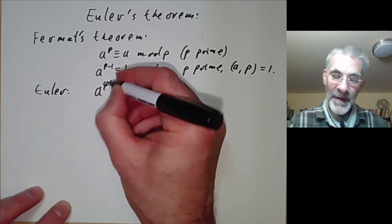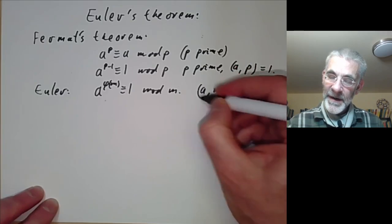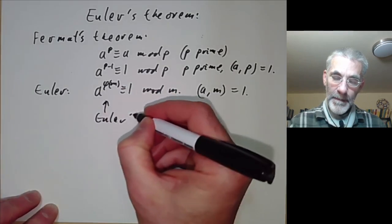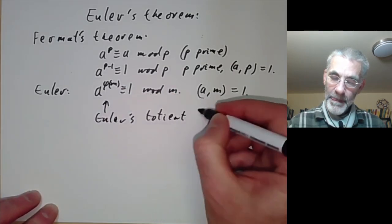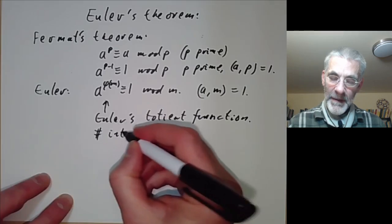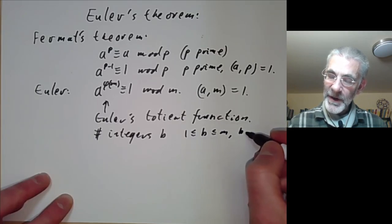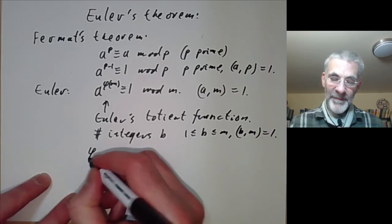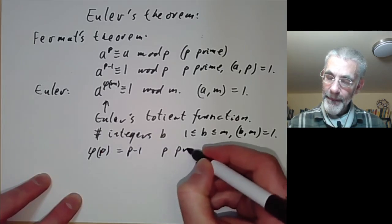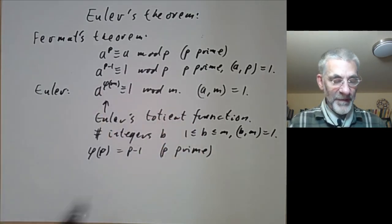Euler's generalisation says a to the φ(m) is congruent to one modulo m. This is for any m, and we again need a to be co-prime to m. Here φ is Euler's totient function — it's the number of integers b with 1 ≤ b < m that are co-prime to m. Of course if p is prime then φ(p) equals p minus one, so in the special case when m is prime this gives us the second form of Fermat's theorem.